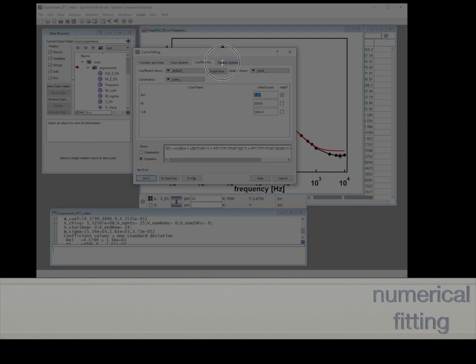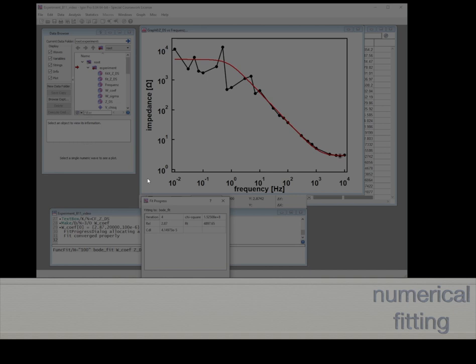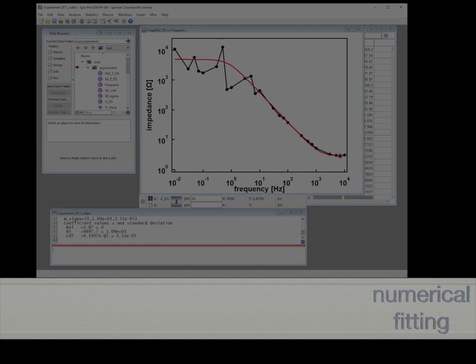Before we disable the text box to the graph, we do fit again. Now we see that it's pretty nice that the electrolyte resistance is given precisely. But now we have a different capacitance of 41 microfarads, and the error is 35. That is our result now.